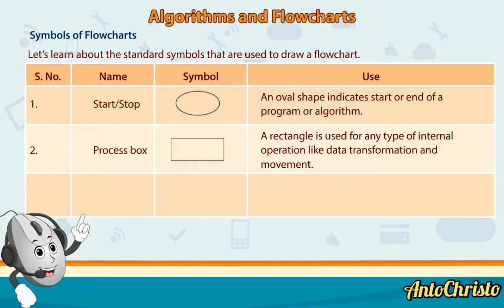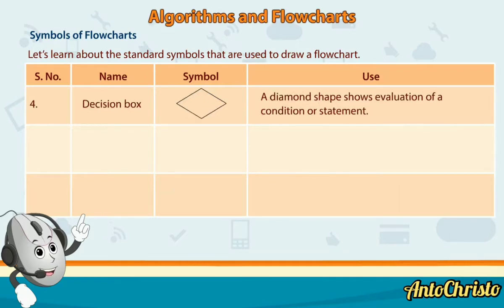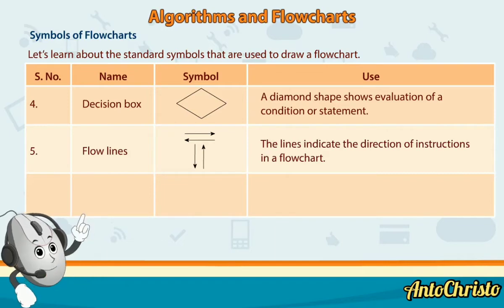A rectangle is used for any type of internal operation like data transformation and movement. 3: Input Output Box. A parallelogram shows input or output of data. 4: Decision box. A diamond shape shows evaluation of a condition or statement. 5: Flow lines. The lines indicate the direction of instructions in a flowchart.